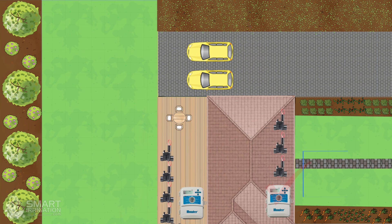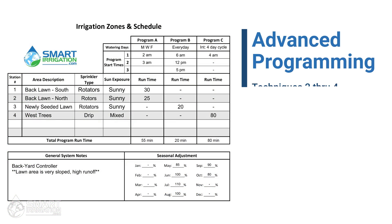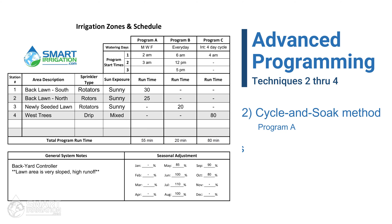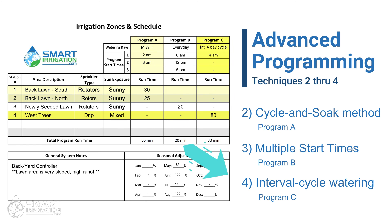With the front controller fully programmed, let's move on to the backyard controller. According to this controller's master schedule, it also needs three different programs to best meet the needs of its irrigation zones. However, this schedule also introduces two new advanced programming techniques: the cycle and soak watering method and interval cycle watering days.